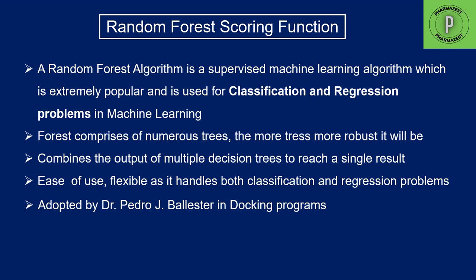RF scoring function stands for Random Forest scoring function. It is a machine learning algorithm — specifically a supervised machine learning algorithm. In supervised algorithms, data is stored. Whenever a function is performed it takes into consideration a certain amount of data. Suppose we perform a study, give input data, get a result, and then later perform another experiment — the data from the first experiment is stored and also present during the second experiment.